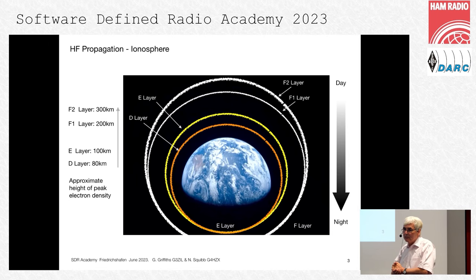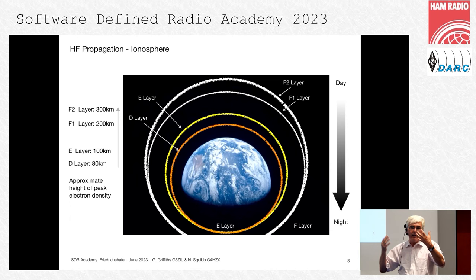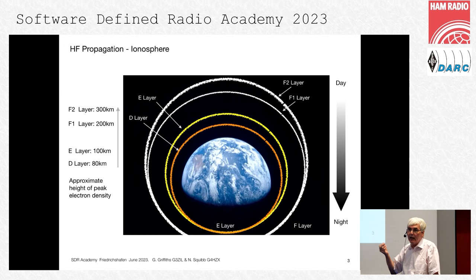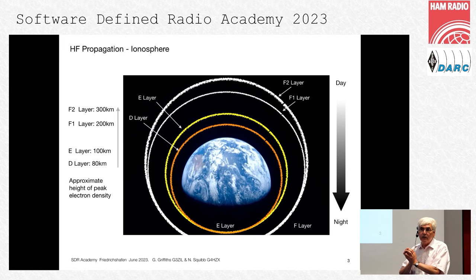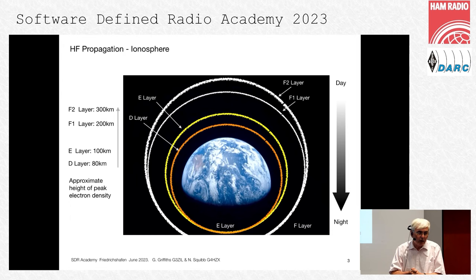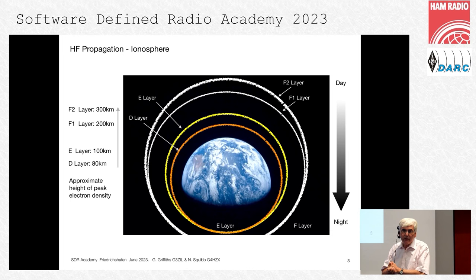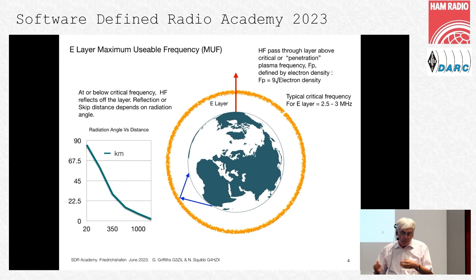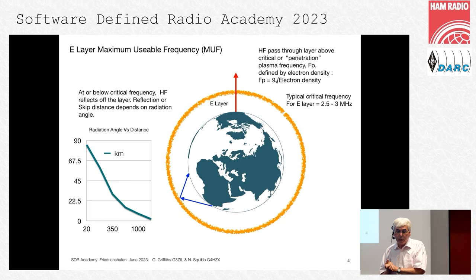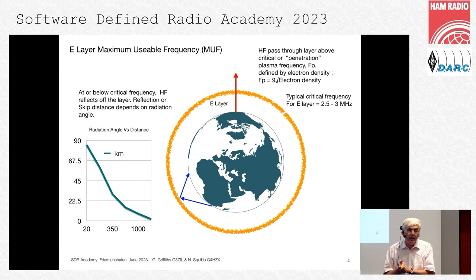A quick refresher on propagation: we have E and F layers in the ionosphere. During the day, the F layer splits into F1 and F2, and the E layer splits into a D layer and the main E layer. At night these coalesce back into just the E and F layers. We're very dependent on the position of the sun. There are two maximum usable frequencies: an E layer MUF and an F layer MUF.